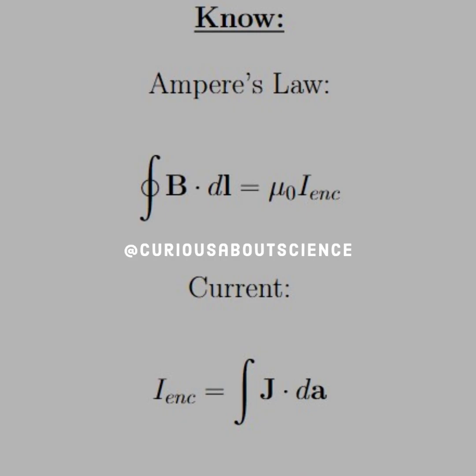Ampere's law, which is a closed integral B dot dL is equal to mu naught I enclosed, very similar to Gauss's law. And the current can be found by integrating the current density over the respective surface area. And that can be enclosed or otherwise, but generally written as enclosed in the text.